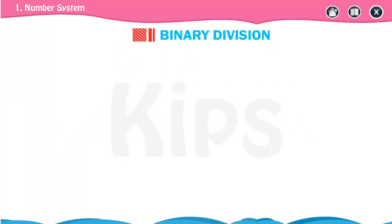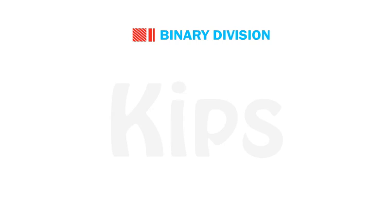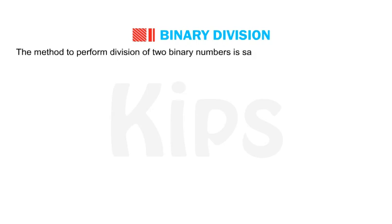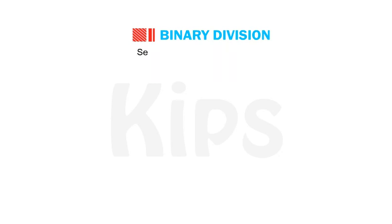Now let us find out how binary numbers are divided. The method to perform division of two binary numbers is the same as that of decimal numbers. See the examples given below.